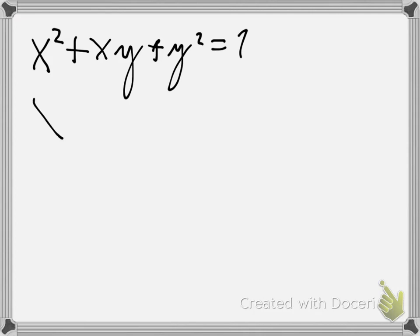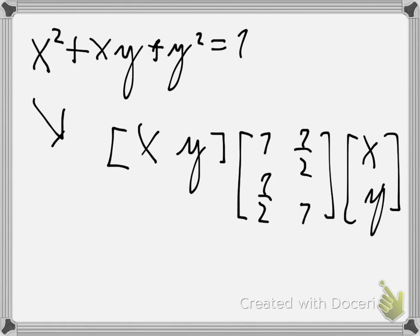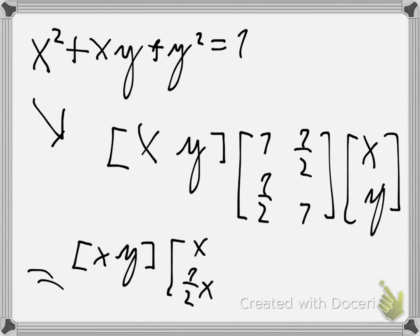We can rewrite that in matrix form the following way. You take the vector x transpose, then the first coordinate is 1, then you take a half, 1 over 2, and here also 1 over 2, and then 1, and then the vector xy. If you multiply that, you see that you get xy times x, 1 half x, 1 half y, and y.